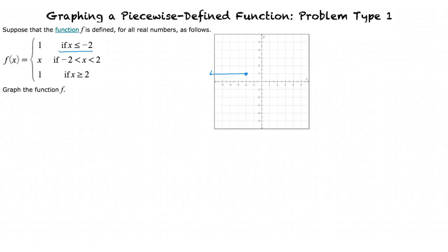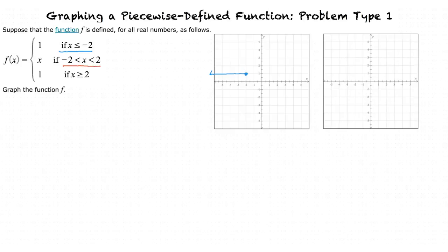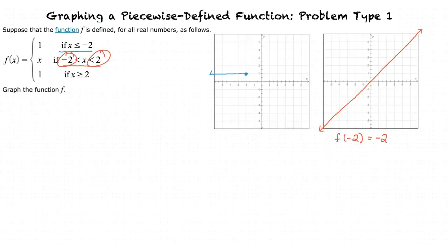Now let's look at the second piece of our piecewise function where f of x is equal to x if x is greater than negative 2 but less than 2. First, let's plot our graph f of x is equal to x. Next, let's look at our domain restriction so we can determine what the y values at the endpoints are going to be. We can determine these endpoints by plugging in x is equal to negative 2 and x is equal to 2 into the equation f of x is equal to x. In this case, f of negative 2 is equal to negative 2 and f of 2 is equal to 2.